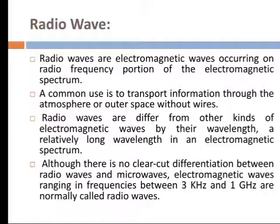Radio waves are electromagnetic waves occurring on the radio frequency portion of the electromagnetic spectrum. A common use is to transport information through the atmosphere or outer space without wire. Radio waves differ from other electromagnetic waves by their relatively long wavelength in the electromagnetic spectrum. Although there is no clear-cut differentiation between radio waves and microwaves, electromagnetic waves ranging from 3 kHz to 1 GHz are normally called radio waves.